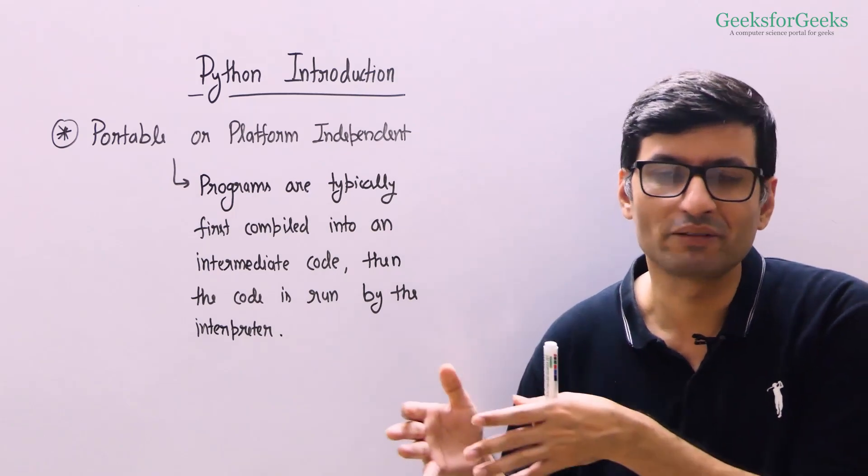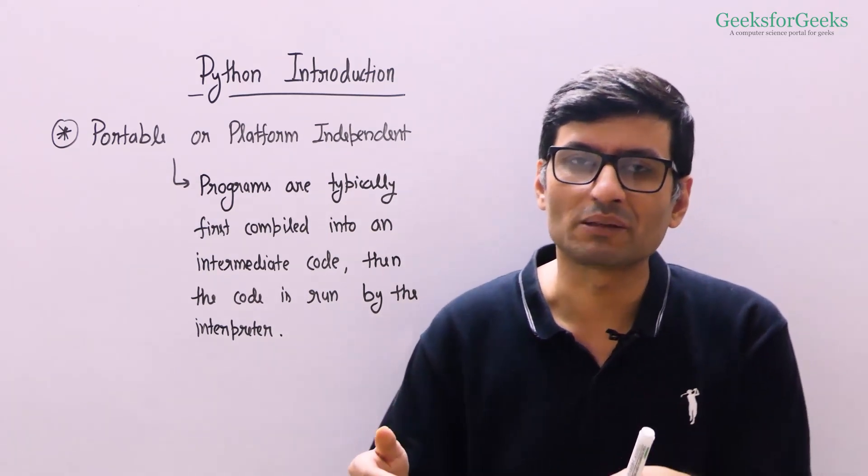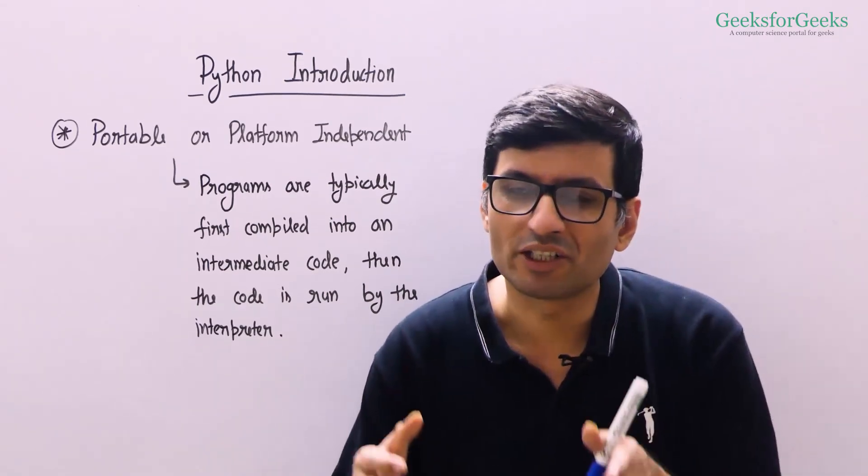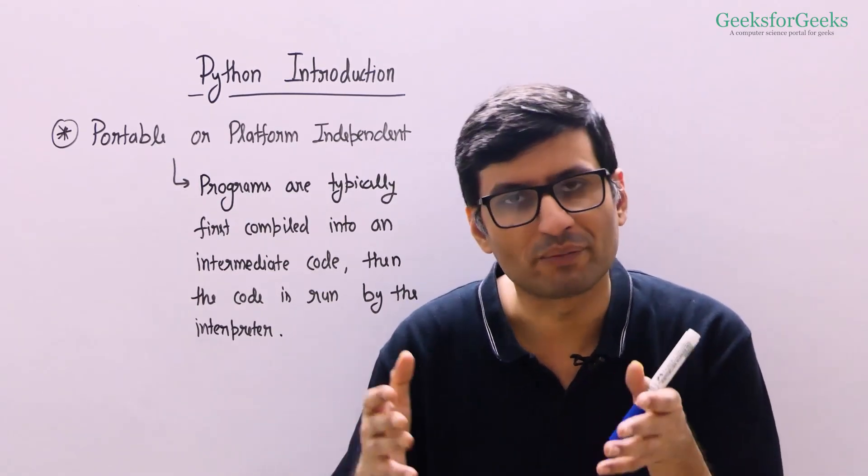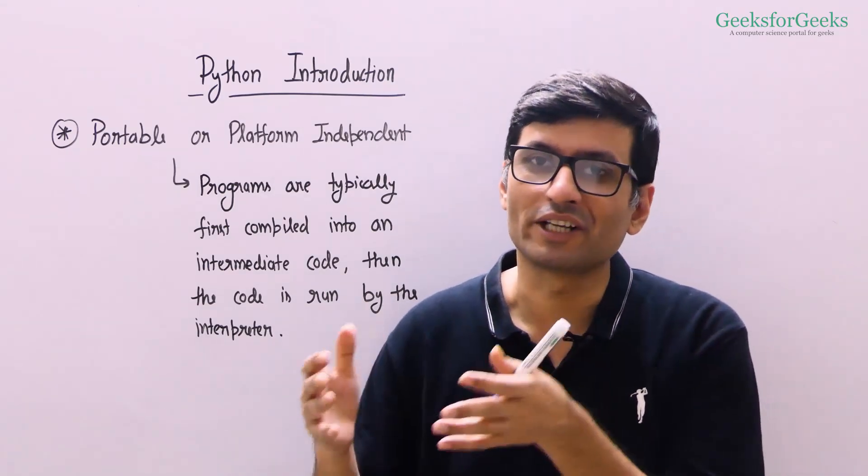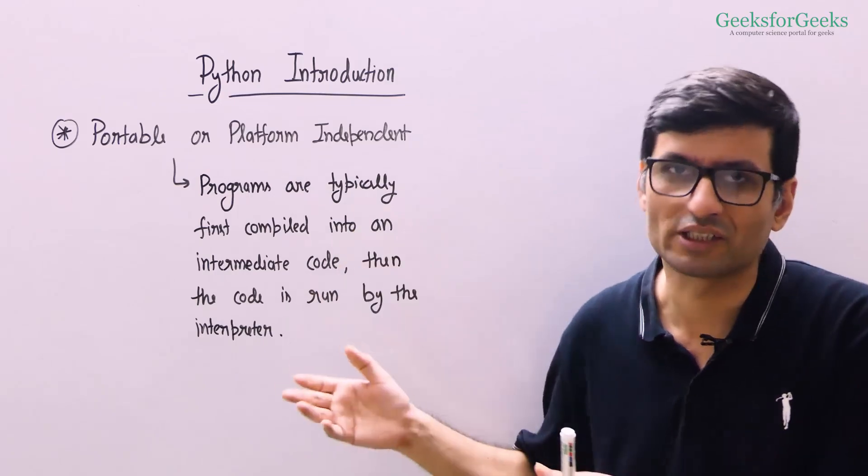Python programs are first compiled into a machine-independent intermediate code. Then this intermediate code is executed by the interpreter, and you can run a Python program on any machine because of this two-step process.